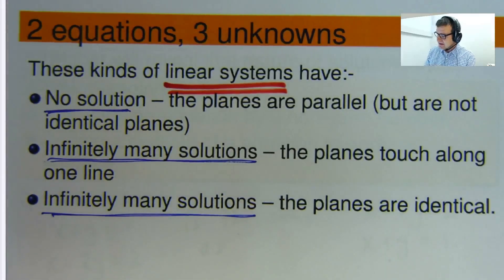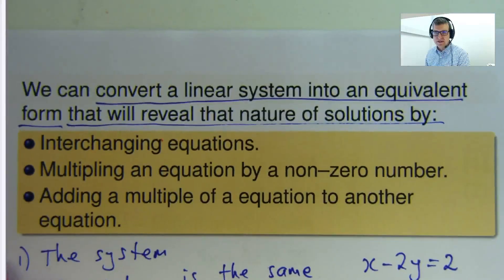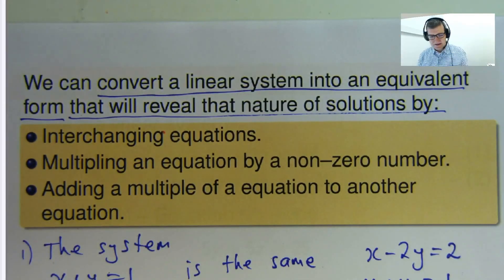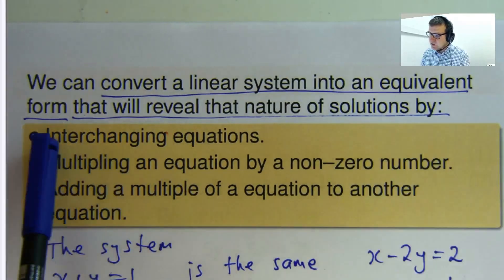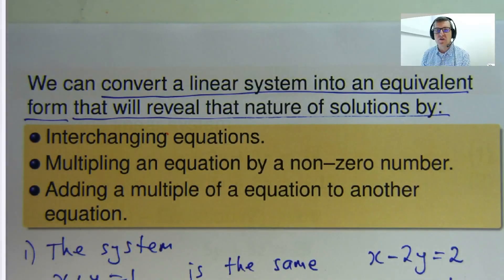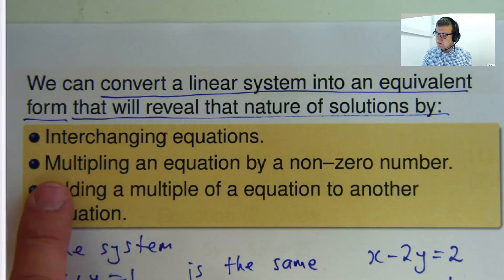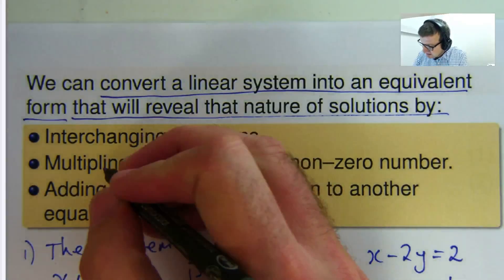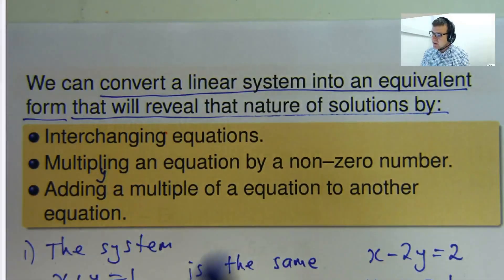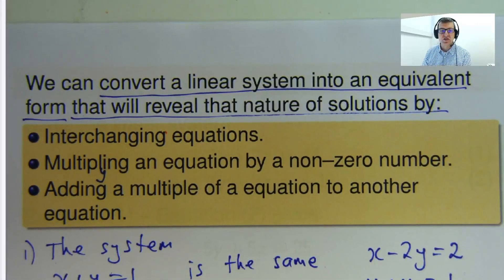So they're the three situations. So here, remember from the previous video, we can convert a linear system into an equivalent, more basic form that will reveal the nature of its solutions by doing these three things. A combination, perhaps, of these three things. We can interchange equations. We can multiply, multiplying an equation by a non-zero number. We can add a multiple of one equation to another equation.